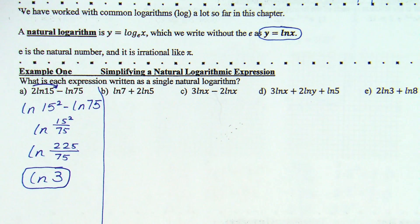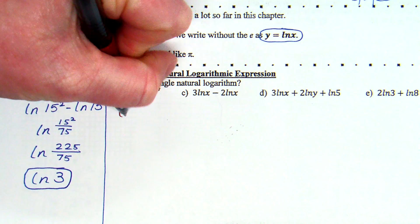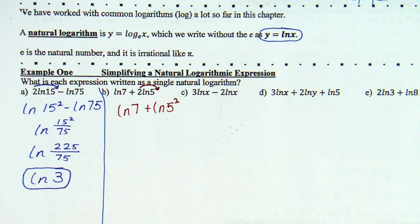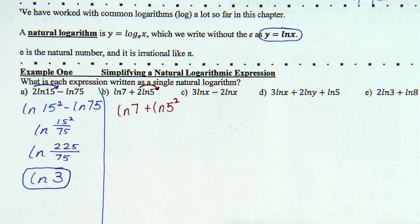Okay, B. Let's try it. Natural log of 7 plus 2 natural log of 5. Same thing as last time. We're going to start by moving the 2 into the power. Remember, you can't use product or quotient. You have to move the numbers out front. So, now I have natural log of 7 plus natural log of 5 squared.